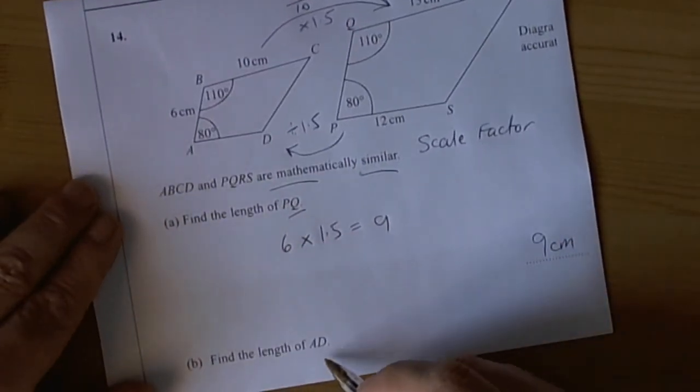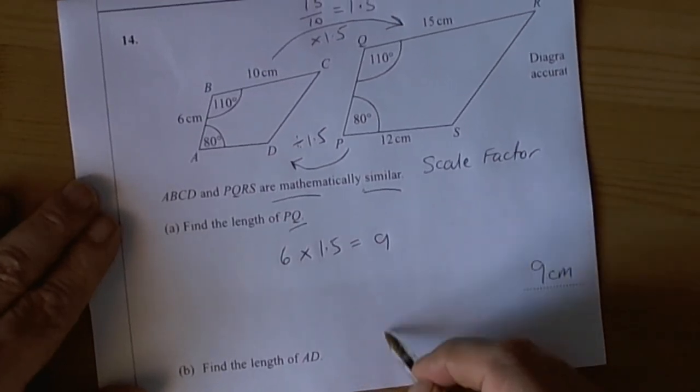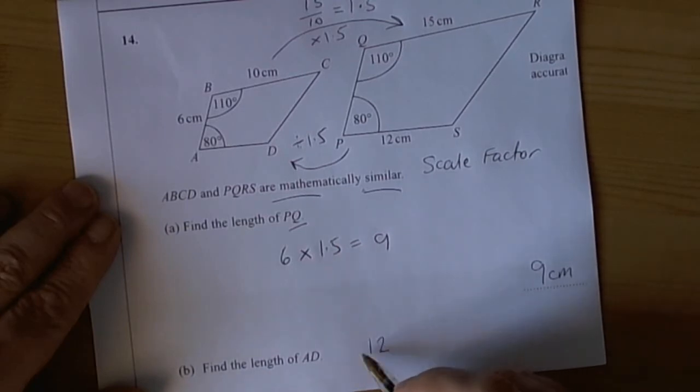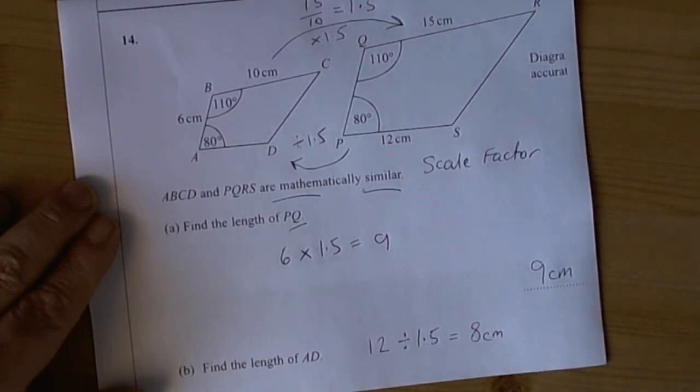The second part of the question asks for the length of AD. AD is the bottom side, so we're going from the big shape, which was 12, down to the small shape. We're going to divide by the scale factor, and 12 divided by 1.5 gives us an answer of 8cm.